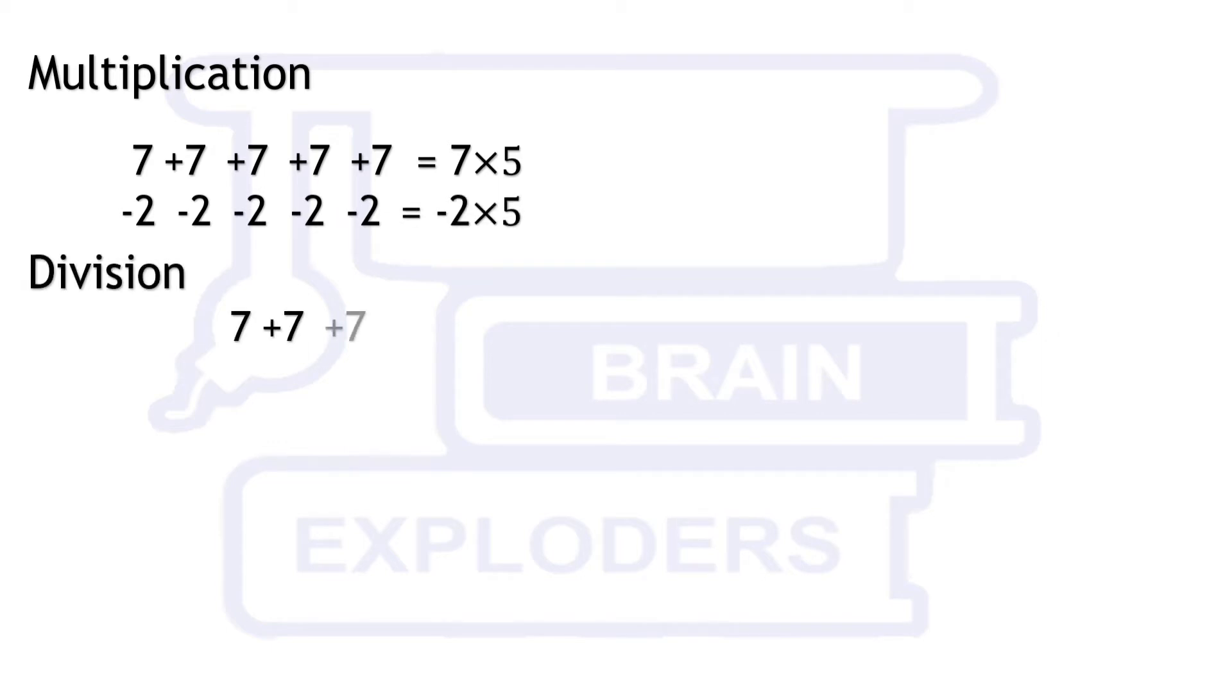Meaning of multiplication is multiple additions. If we are multiplying 7 with 5, it means we are adding 7 five times. Division is the reverse of multiplication. If we divide something into equal groups, then the value of each group is found by division.